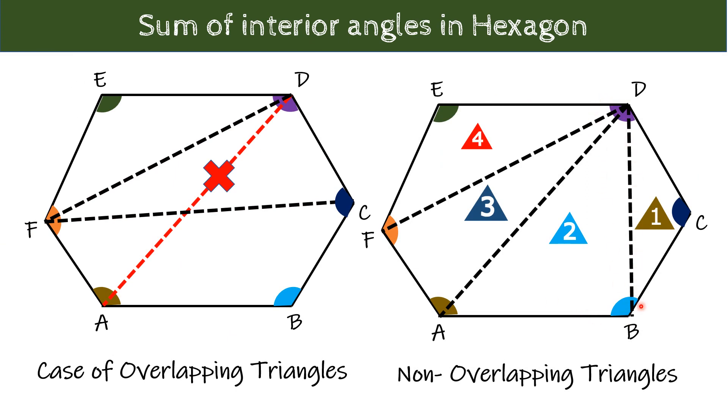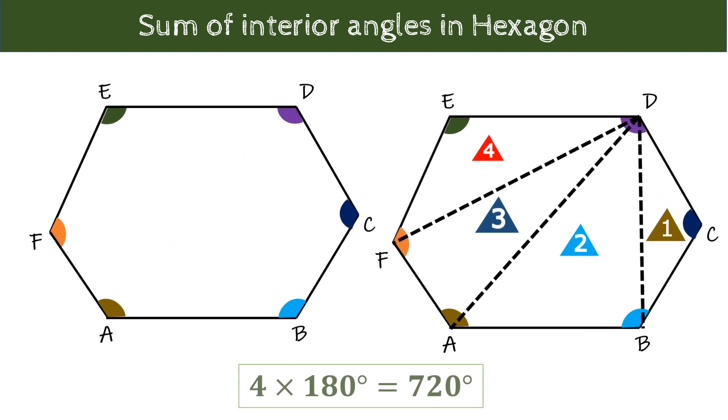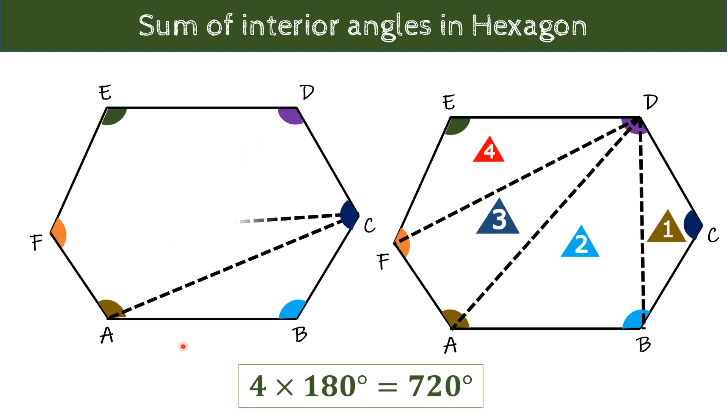Now, if properly done, you will get the same number of triangle. Like here we got 1, 2, 3 and 4 triangles. We are able to draw four non-overlapping triangles that perfectly cover this hexagon. If we have total four triangles, as earlier discussed, here total sum of all these angles will be 4 times 180 degree which is equal to 720 degrees.